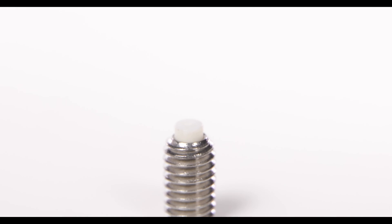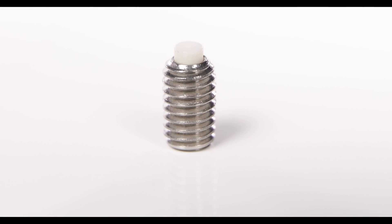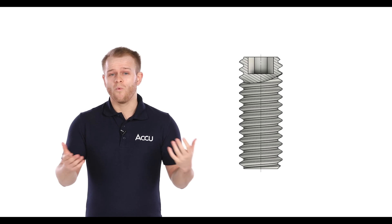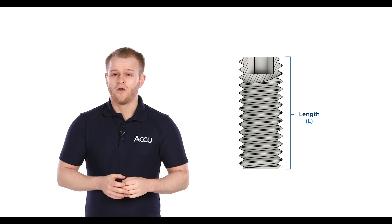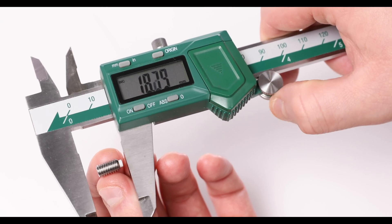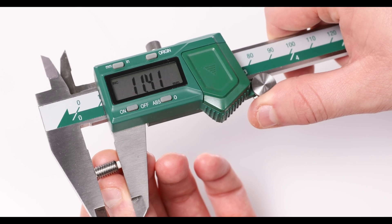And with grub screws there's often confusion over whether the tip of the screw is included or not in finding its nominal length. The answer? Well with grub screws the nominal and overall lengths are one and the same regardless of tip type or functionality. So we'd measure them in the same way as a countersunk screw from top to bottom.